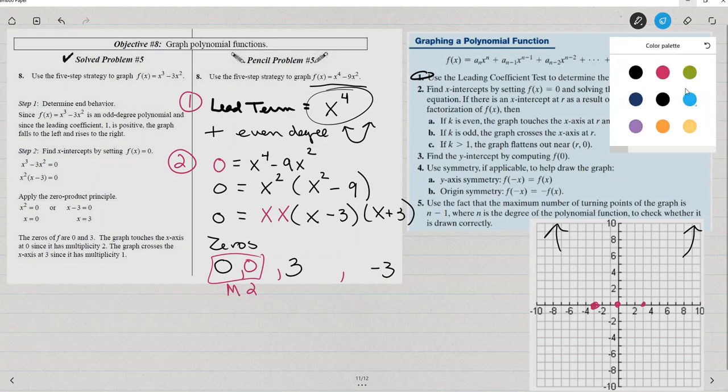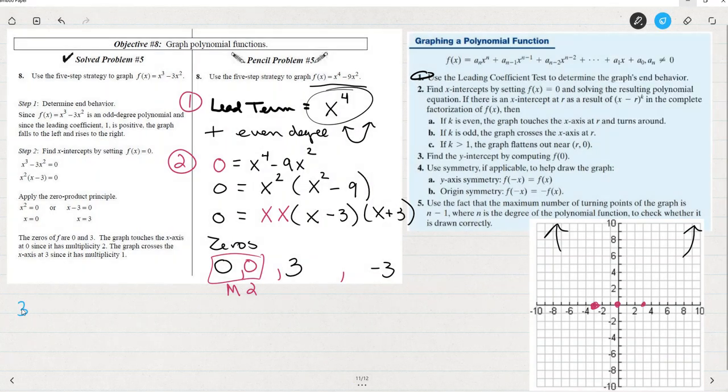The next one, the y-intercept. That's really the easy one. If I have f of x equals x to the fourth minus nine x squared,